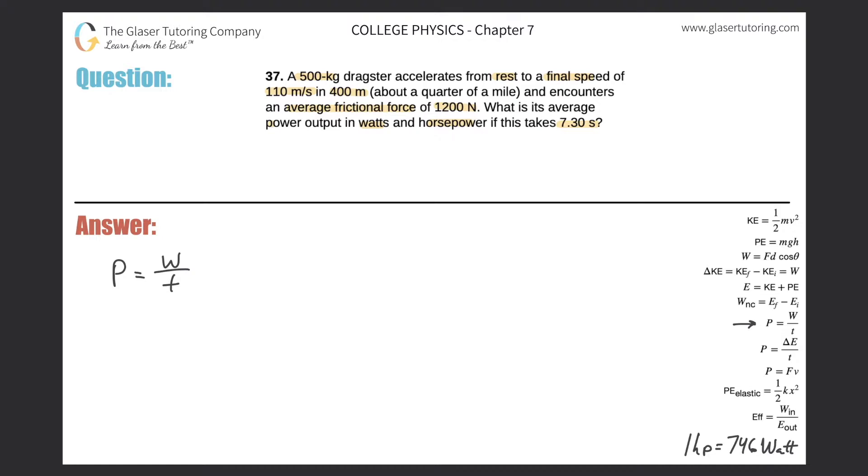Now in order for me to calculate power, I need to know the amount of work being produced by an object and the time over which it is producing that work. It tells me that it's asking me what's the average power if it takes 7.35 seconds? So I actually know the time.